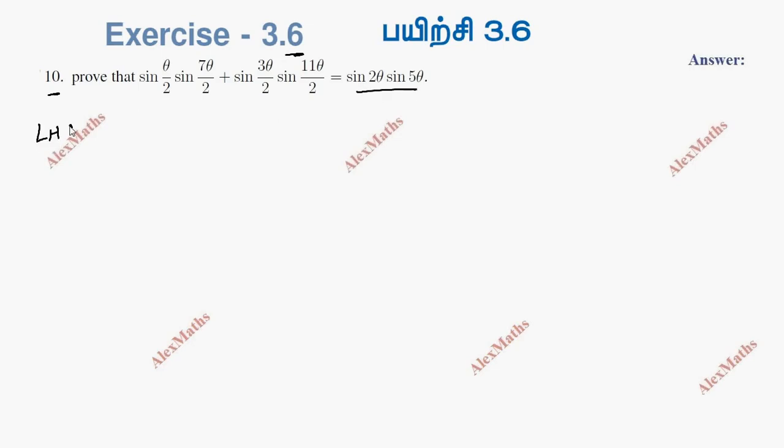We start with LHS. If LHS is a sin term, we use the formula for sin x into sin y, which is minus half cos of x plus y minus cos of x minus y.